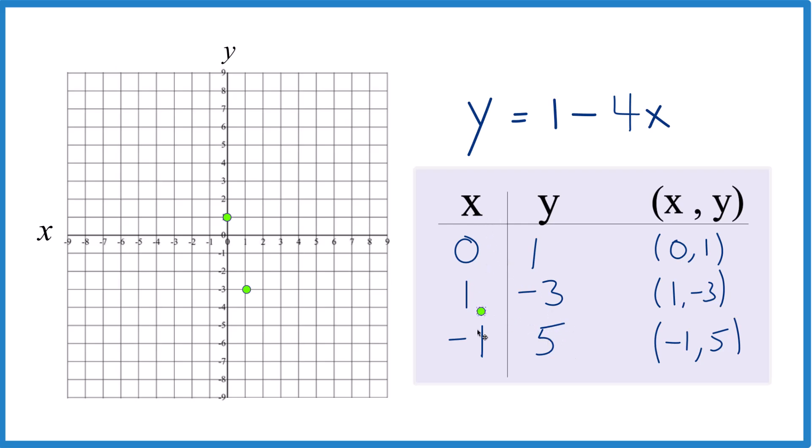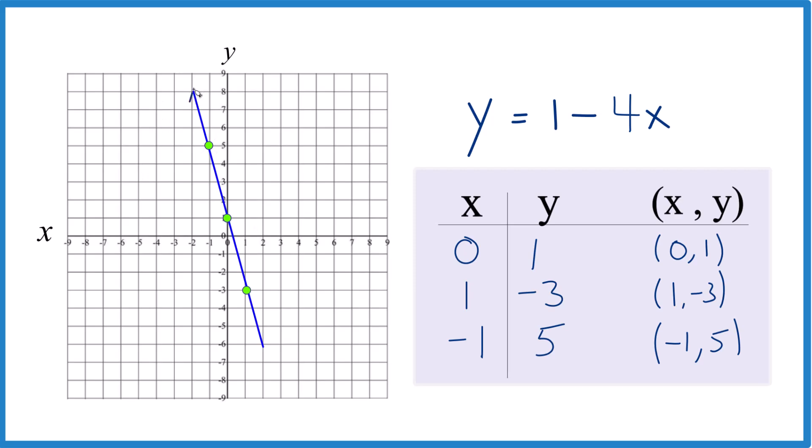So x is negative 1, and y is 5 up here. And they line up nicely. Let's put a line through them. And put arrows here. Show it goes to infinity. That's the graph for y equals 1 minus 4x.